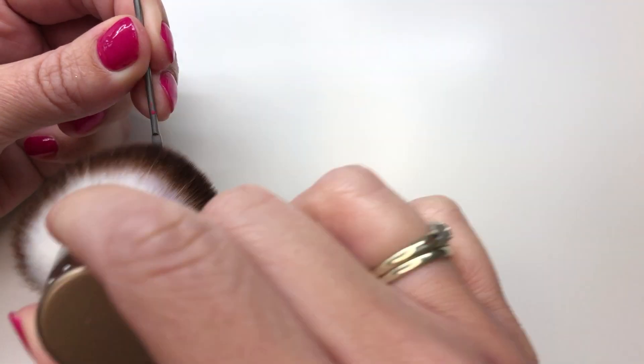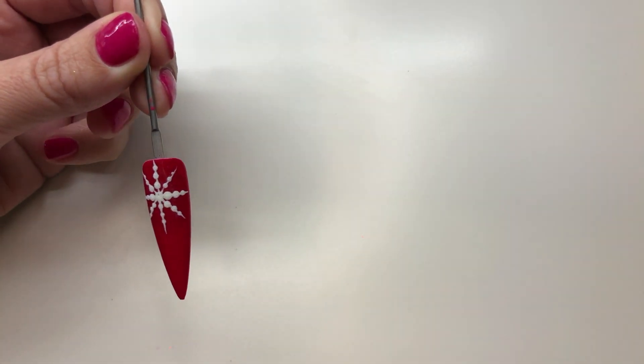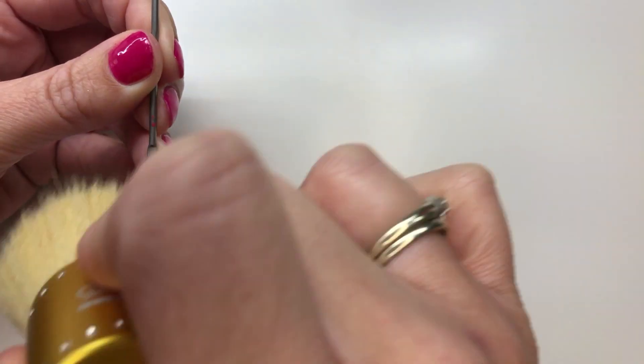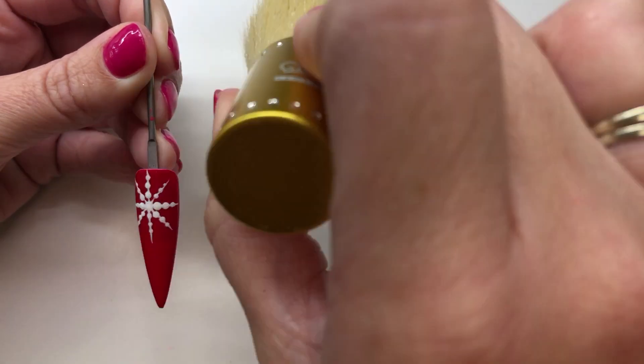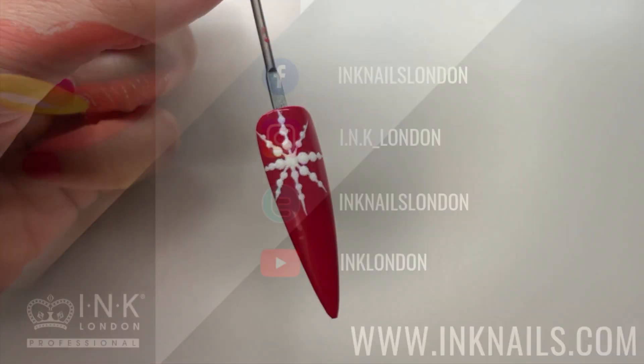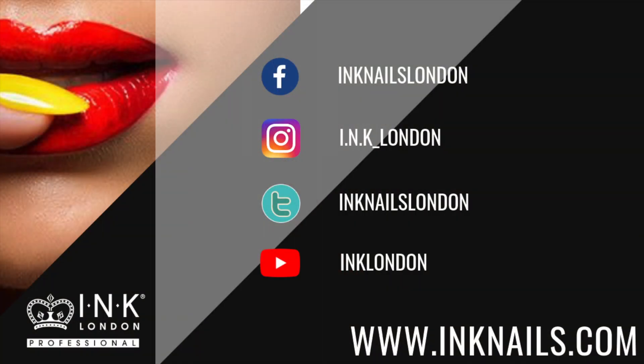Once it's cured, you're ready to dust off all of the excess glitter. You might need to use a stiffer brush as well just to make sure you get rid of all the excess bits. Then you're left with your really nice textured snowflake design on top of your lovely iLac color.